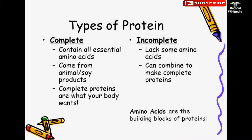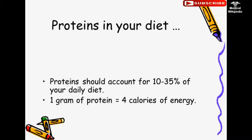Types of protein: Complete proteins contain all essential amino acids and come from animals or soy products. Incomplete proteins lack some amino acids but can be combined to make complete proteins. Amino acids are the building blocks of proteins. Proteins should account for 10–35% of your daily diet. 1 gram of protein equals 4 calories of energy.